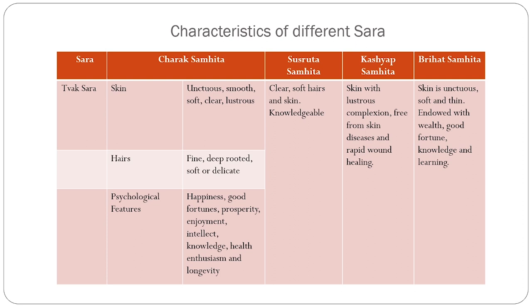Starting with Tvak Sara — the characteristics told by Acharya Charak: the skin of a Tvak Sara individual appears as Snigdha, Slakshana, Mridhu, Prasanna, Sukshma, Alpa-Gambheera, Sukumar, Loma, Saprabha. That is, the skin appears unctuous, smooth, soft, clear, and lustrous, while the hairs appear fine, deep-rooted, soft, and delicate. Acharya Charak has described both physical and psychological characteristics of the Tvak Sara individual.